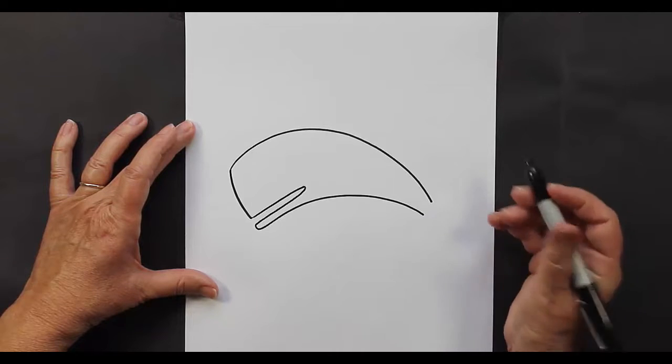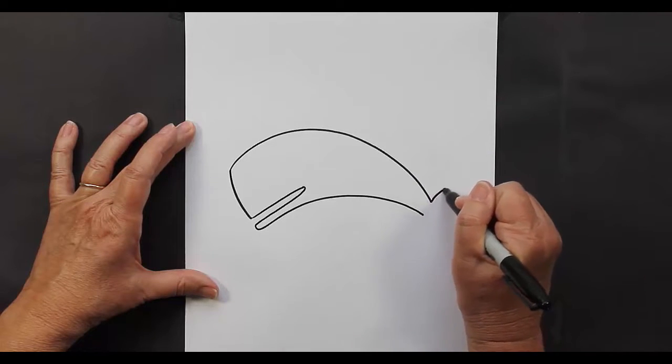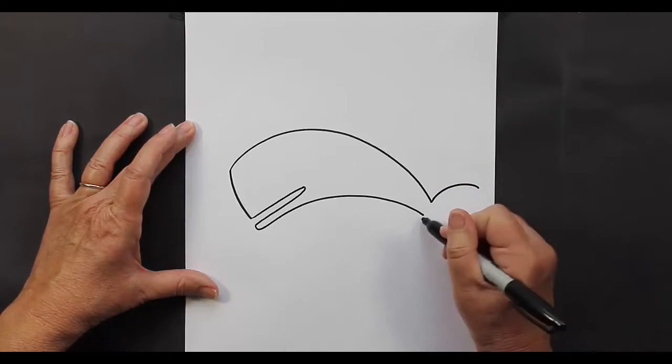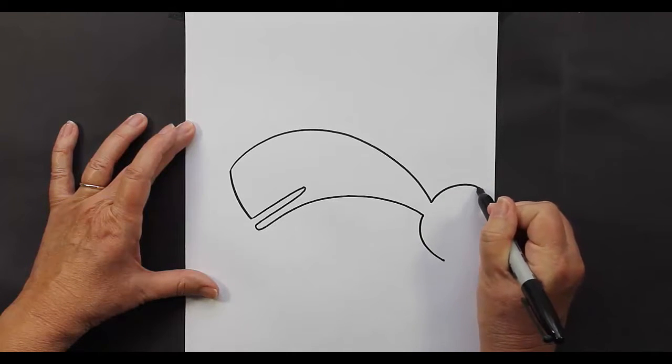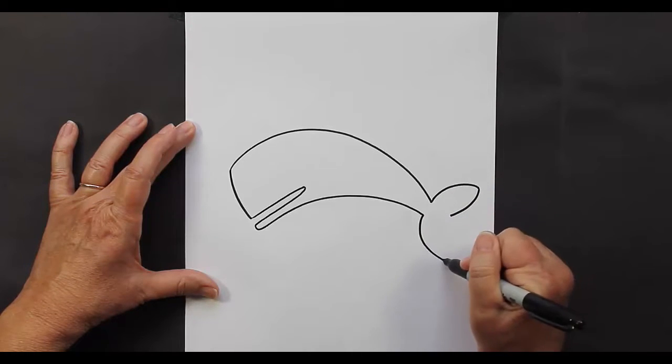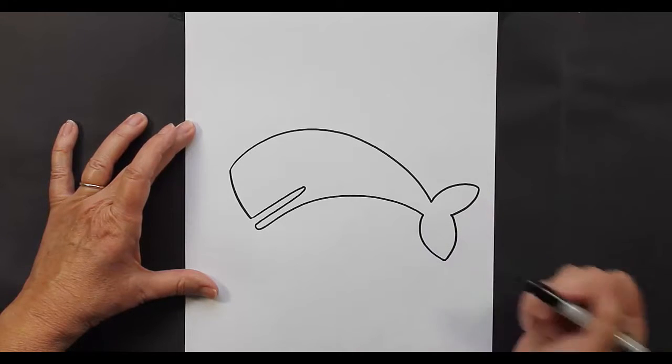At the back here where his tail is you're going to make a curved line, a curved line, come back in and come back in with two more curved lines.